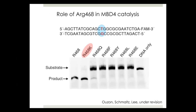We did a mutational study where we mutated arginine to various amino acids. Only the lysine mutant showed activity. Other mutants such as valine, tyrosine, leucine, and glutamate did not show any activity, whereas glutamine showed some partial activity.